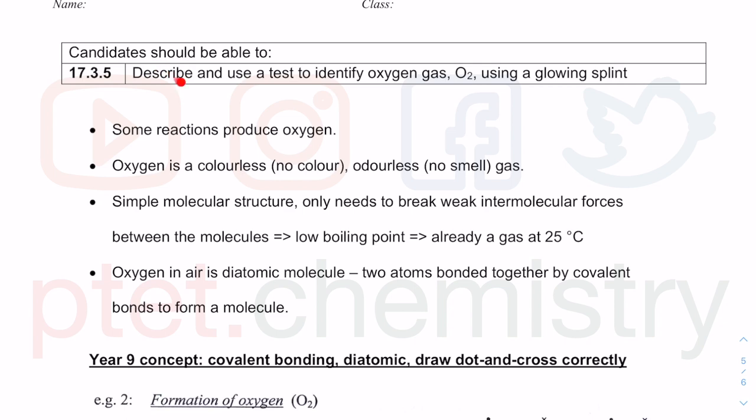Candidates should be able to describe and use a test to identify oxygen gas using a glowing splint. I don't know why they put it under the specification for redox changes, apart from the fact that redox involves reductions and oxidations happening simultaneously in the same reactions, where reduction is loss of oxygen and oxidation is gain of oxygen.